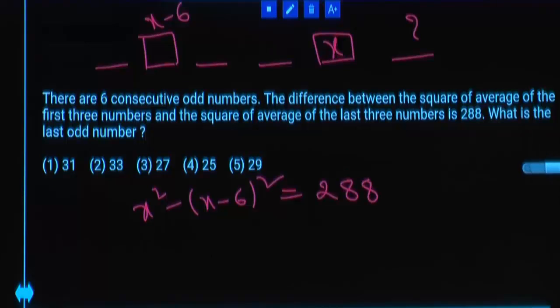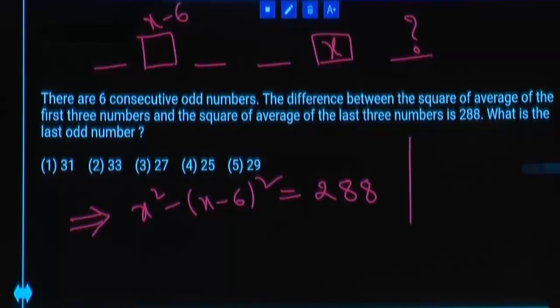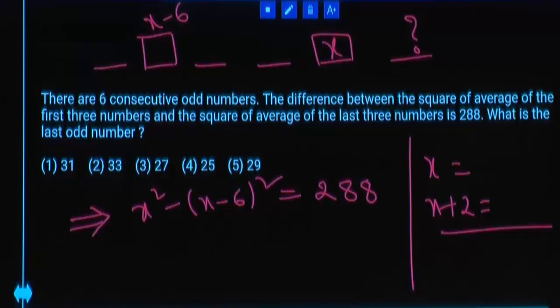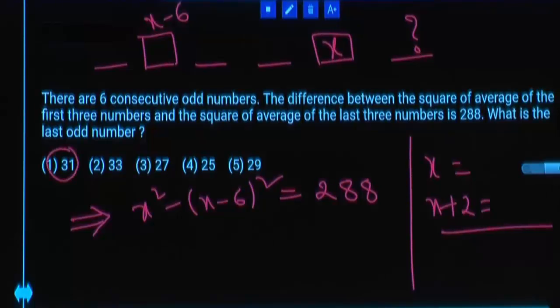You are given that x square minus (x minus 6) whole square is equal to 288. You are asked what is the largest number. Instead of calculating this and getting value of x, if the largest number is 31, this number must be 29. Then this number must be 23. 29 square ends with 1. 23 square ends with 9. 1 minus 9 ends with 2. But what is your last number? 8. Can it be your answer? Cancel.